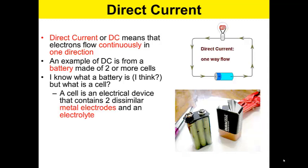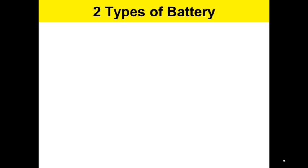A cell is an electrical device that consists of two dissimilar metal electrodes and an electrolyte. If you've taken Chemistry 30, then this is a review for you. An electrolyte is an electrically conductive solution. An electrode is just something like copper or nickel.